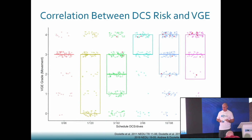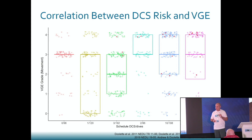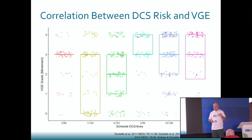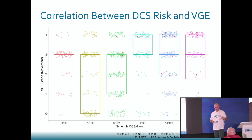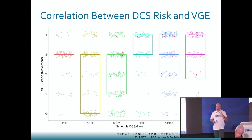Now I'm going to look at the data a different way - rather than organizing dives into VGE grades, I'm going to look at dives of different profiles and what the bubble scores tell us. On the y-axis are the VGE grades, and all the dots on the graph are maximum VGE grades after individual dives - there are about 900 to 1,000 dives in this graph. Along the x-axis I've labeled six different dive profiles in different colors, and the dives are ordered from left to right in increasing risk of decompression sickness.